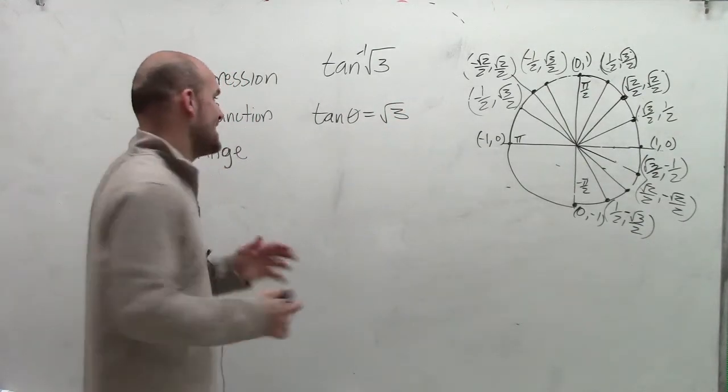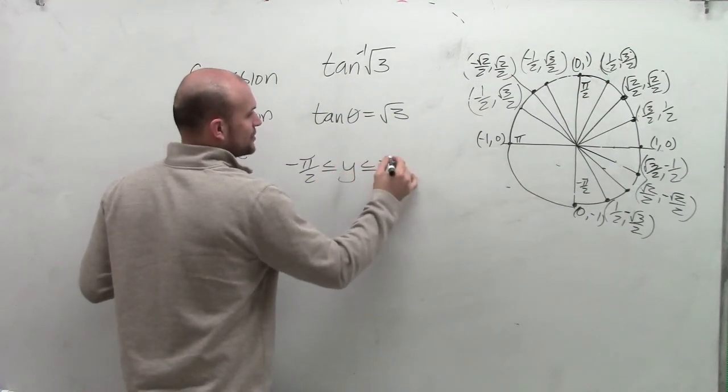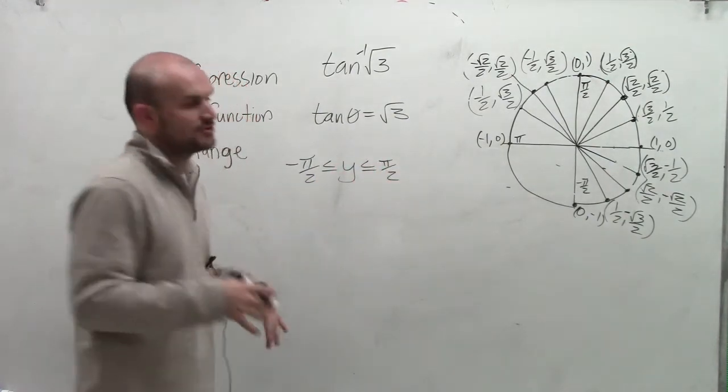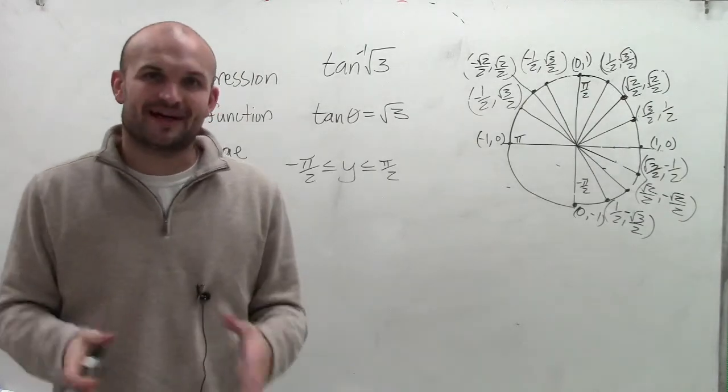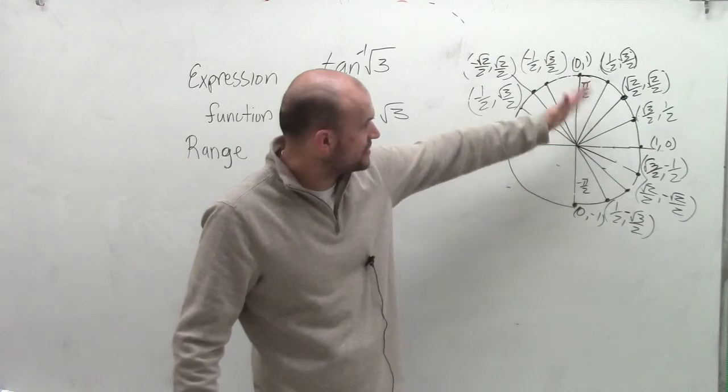That angle has to fall within our range of negative π/2, which is less than or equal to y, which is less than or equal to π/2. So the angle has to fall within that range, which limits us to the fourth and first quadrants.